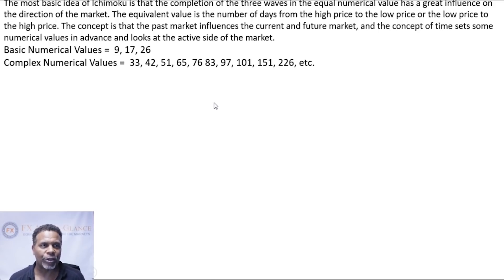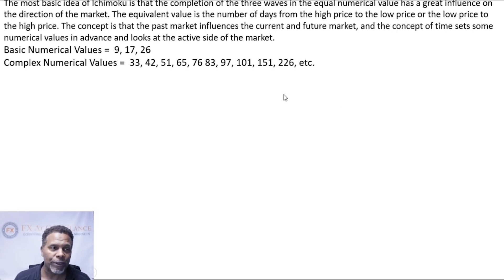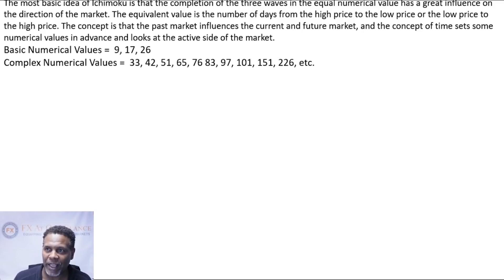Now you know the basic wave structure of the market, and you'll need to understand the time theory also. Ichimoku wave theory has two major tools to consider time periods, known as Kiyansuchi — your basic numerical values — and Tarosuchi — which is equality in the numerical values. The basic numerical values are 9, 17, and 26. The complex numerical values are 33, 42, 51, 65, 76, 83, 97, 101, 151, 226, and so on. You probably want to write those numbers down and remember them.